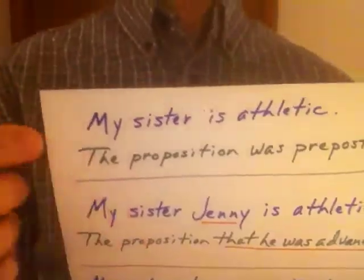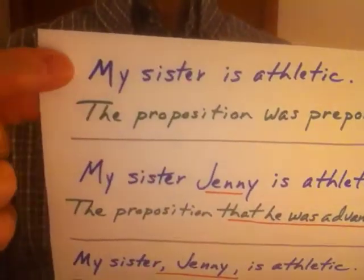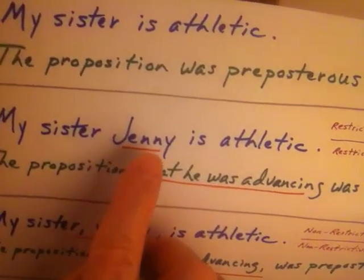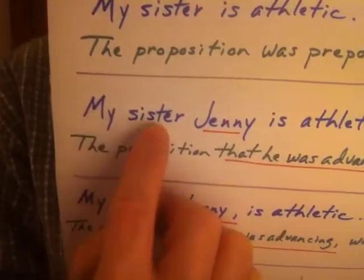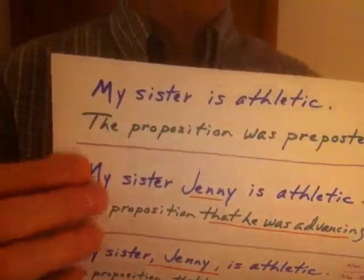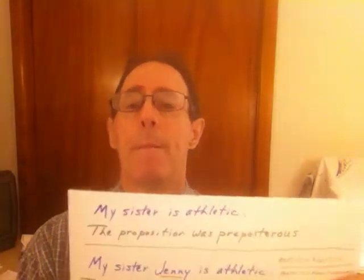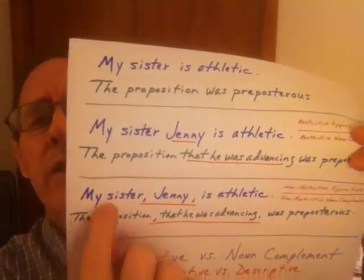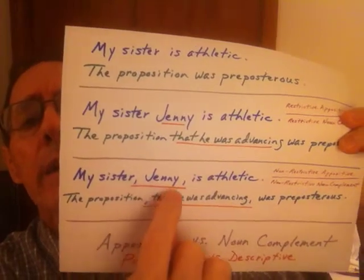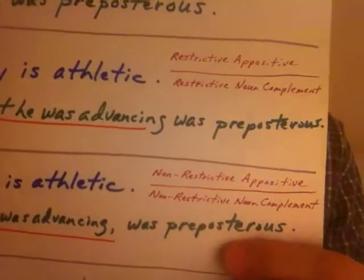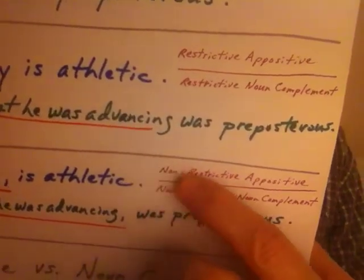So here we have very little information — a basic raw sentence. Here we threw in what we call an appositive. Now we know that I have a sister named Jenny and that Jenny is athletic. But we don't know if that's the only sister. Now I rewrite the sentence and say: "My sister, comma, Jenny, comma, is athletic." This is referred to these days as a non-restrictive appositive.